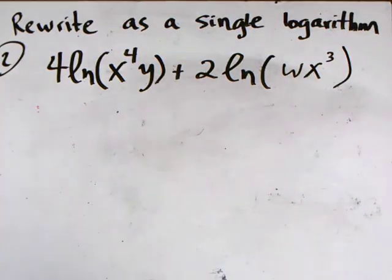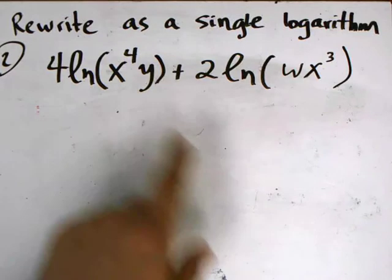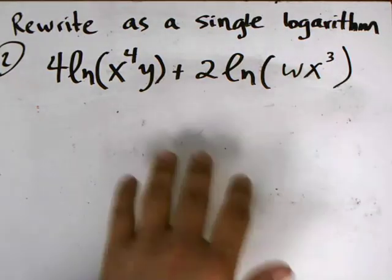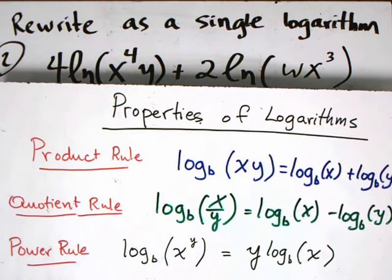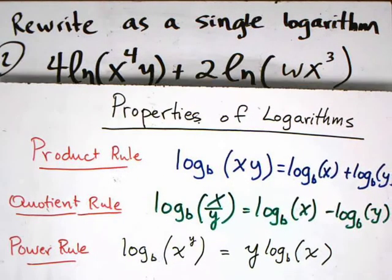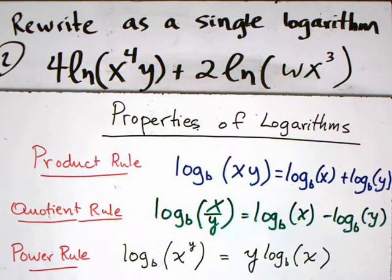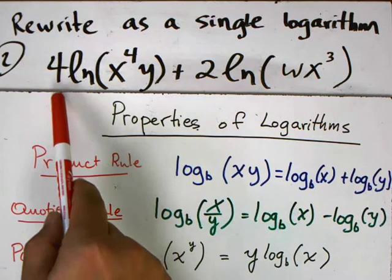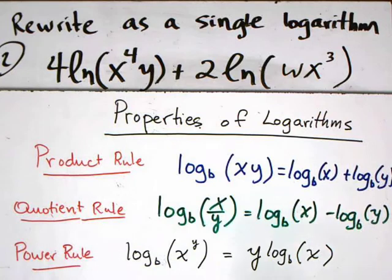For this next example, we're still asked to combine into a single logarithm. The difference is we have a more complicated statement — we have some powers and four different variables. But the rules we apply are still the same: the power rule, the quotient rule, and the product rule. My general idea is to get rid of all the constants in front first by applying the power rule.